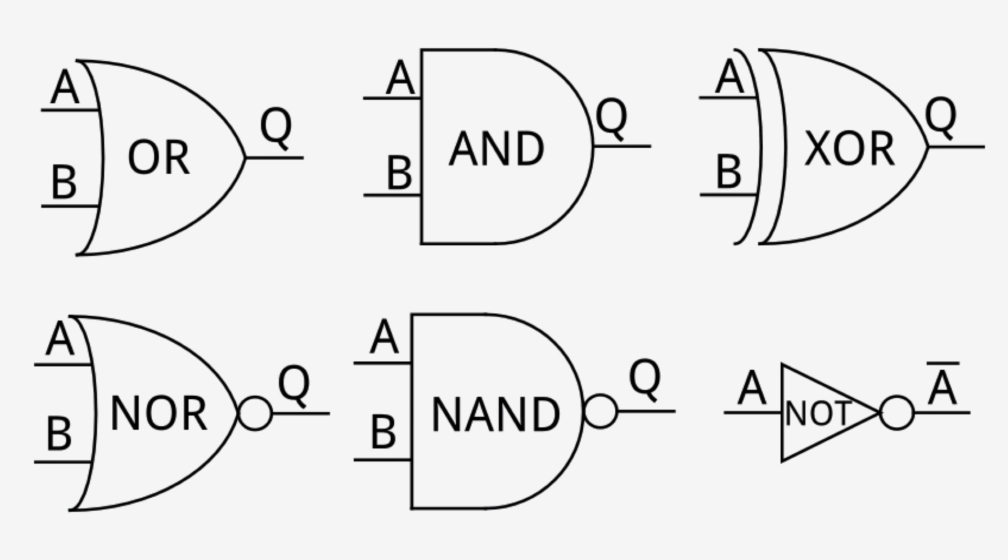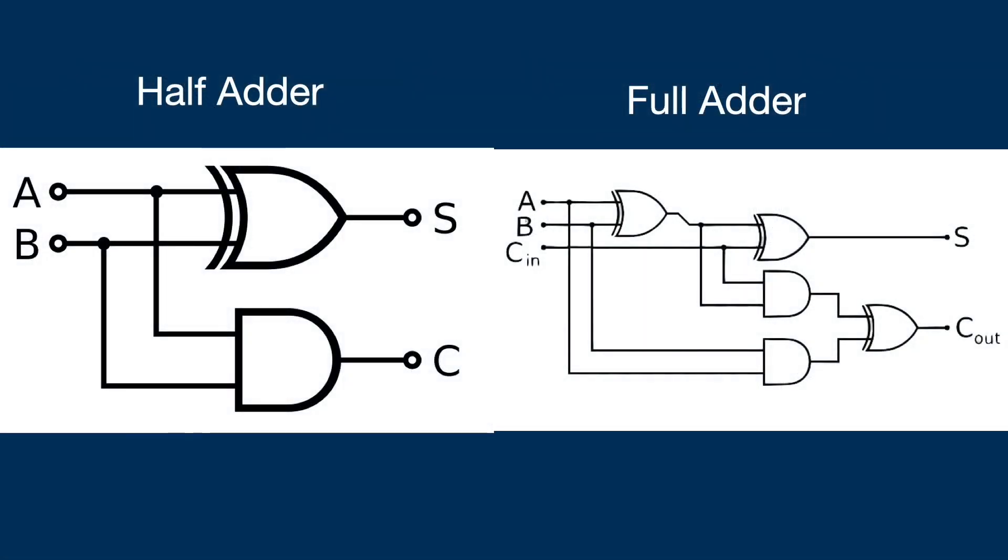Computers implement these arithmetic algorithms via logic gate combos. For example, binary addition is done by a string of half adders and full adders consisting of AND, OR, and XOR gates.